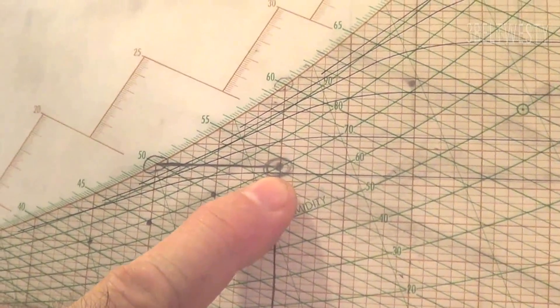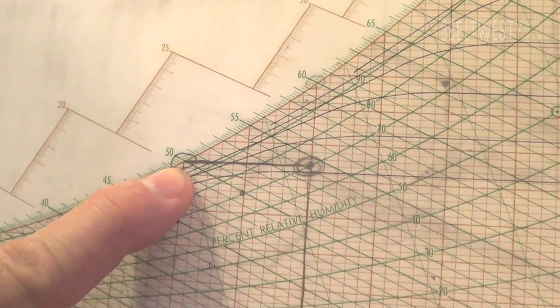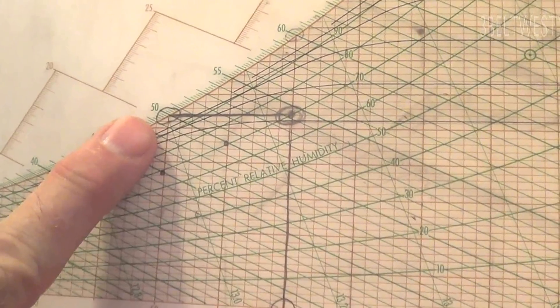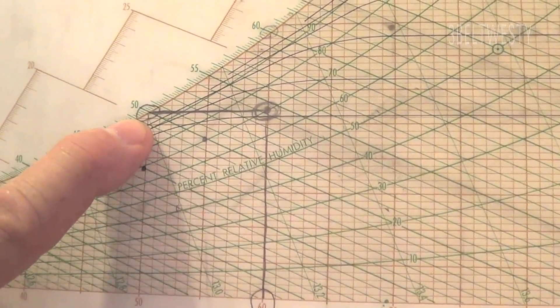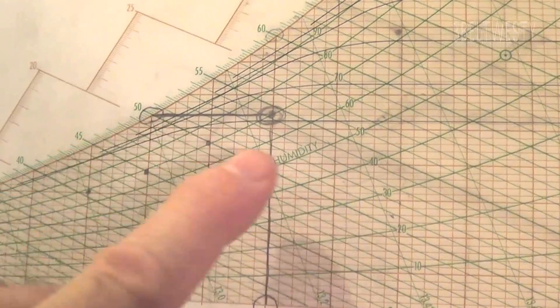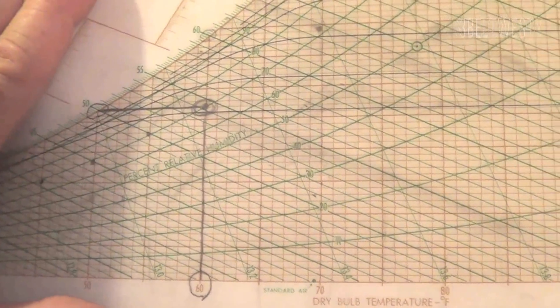Dew point here is if you take this point and you cool it off, that's where dew would form. Again, there's the 10 degree difference: 60°F dry bulb, 50°F dew point, and there's the 70% humidity.